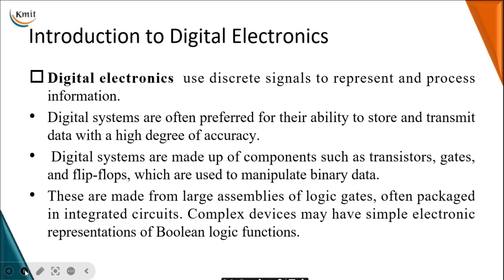After converting, we process the information using digital techniques, then transmit the data through channels. Digital systems are preferred for their ability to store and transmit data with a high degree of accuracy. Digital systems are made up of components such as transistors, gates, and flip-flops, which are used for manipulating binary data. These are made up of large assemblies of logic gates and integrated circuits. Complexity is reduced by dividing modules into smaller modules designed using Boolean logical functions, using basic or universal gates.